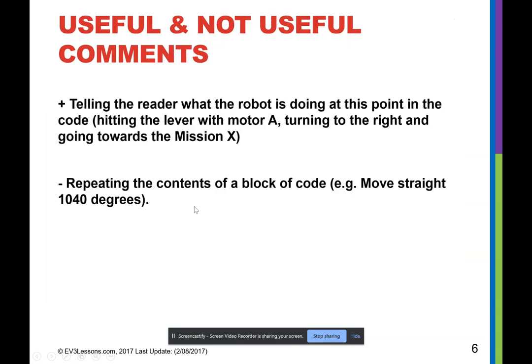What makes a comment useful versus not useful? Something useful is telling the reader what the bot is doing — getting the big picture, zooming out to that pseudocode level of what is supposed to be happening here. What's not useful is repeating the thing that the code already says — like 'moving straight that far' is what the code already says. Zoom out one level. You're not commenting every single line; give a general sense of what is happening here, then here, then here. That's the idea.